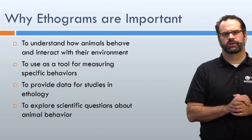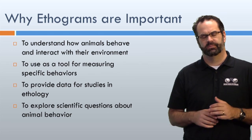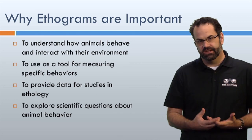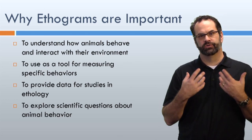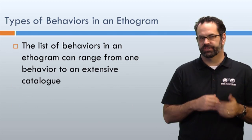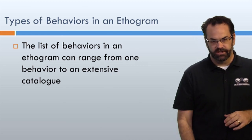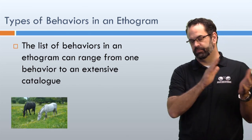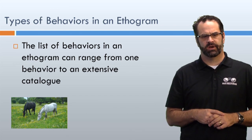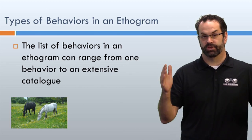This slide summarizes why ethograms are important. It's not just about understanding how animals behave and interact in the environment — the third bullet is really important too, as far as giving us data to study ethology and these behaviors. They are a critical scientific tool. Setting up an ethogram can range from simple to complex. For example, if I just wanted to know how often a gray horse grazes or forages, I could use one-zero sampling and run with it pretty easily.